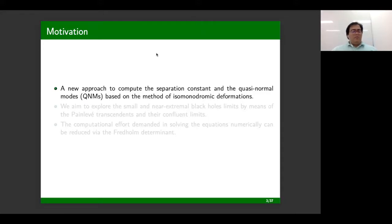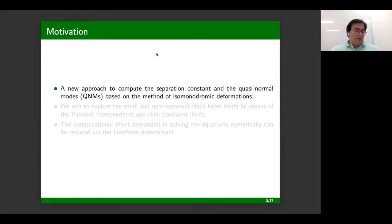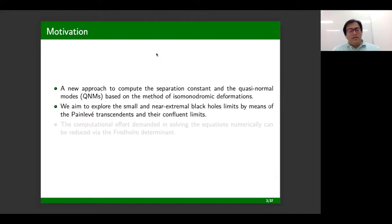Quasi-normal modes are at least a 50-year-old problem and one can take their favorite method and compute them — for example, WKB approximation, or numerics like the continued fraction method or spectral methods. But I think that with the method of isomonodromic deformations, we can explore the analytic structure of the accessory parameter and also compute asymptotic expansions for the eigenfrequencies. We can also explore different limits in terms of the Painlevé-6 and in terms of confluent limits of the Painlevé-6 transcendents.